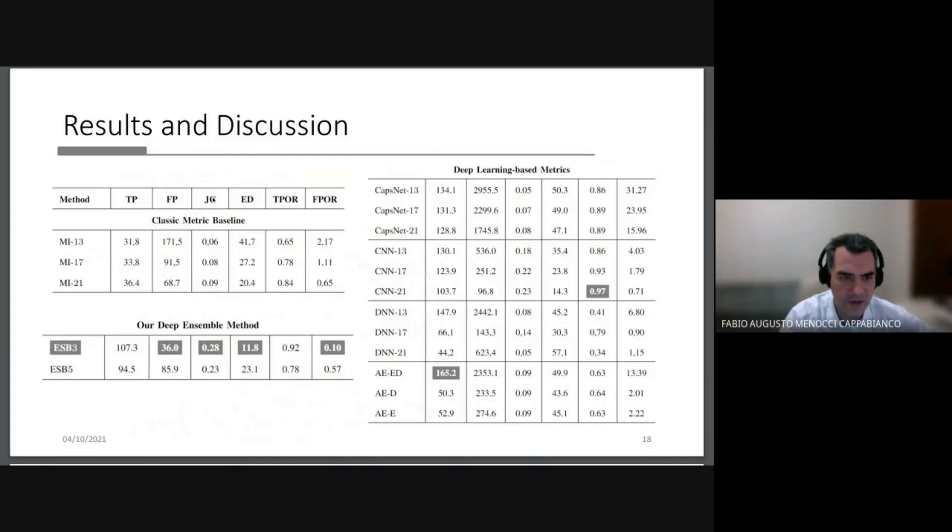And as we can see, according to both classical metrics, our ensemble got the best results. Also in terms of false positives in our new evaluation metric. CNN 21 got a very good result too, and even better than ours in terms of true positives. But it got seven times more false positive results.